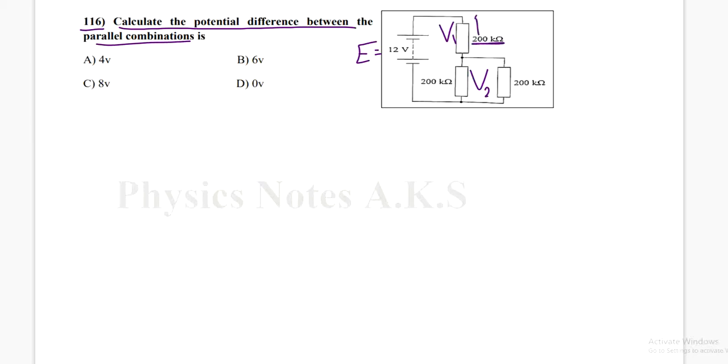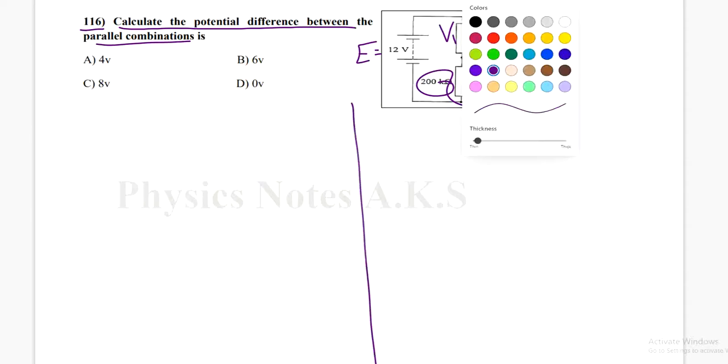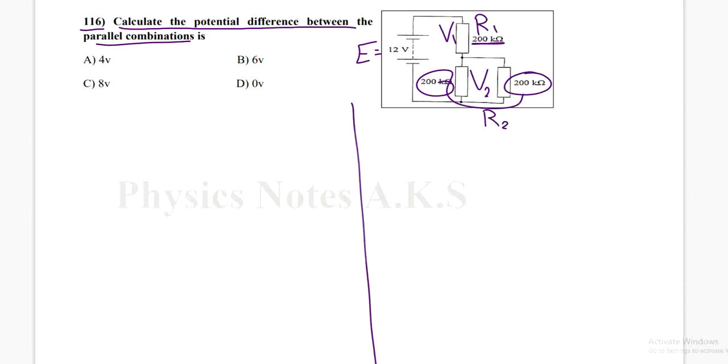This resistance here, I will name it R1. And the total of this and this, I will call it R2. So they need the potential difference in R2, which is the total in the parallel combination.